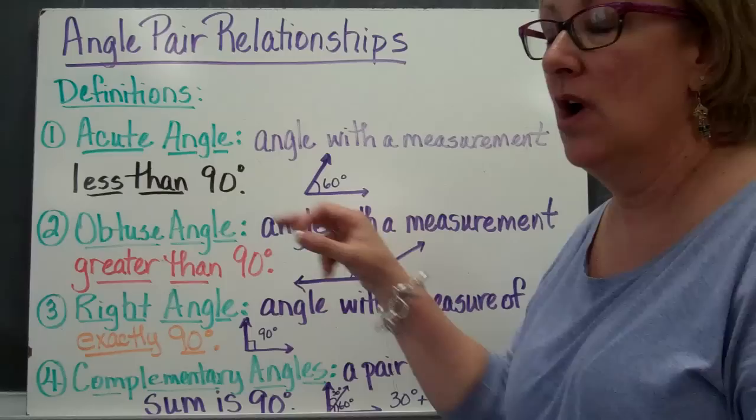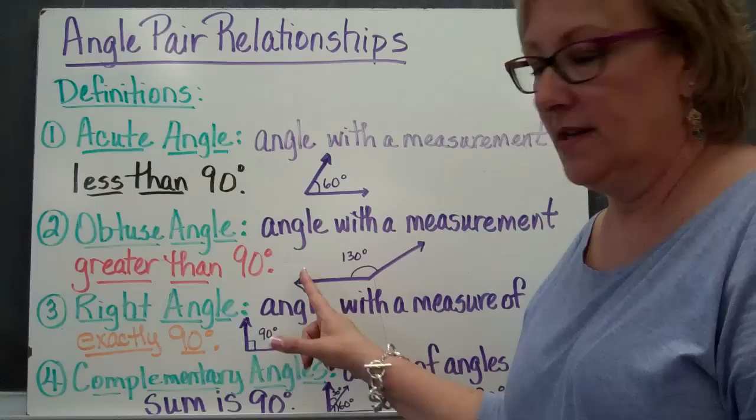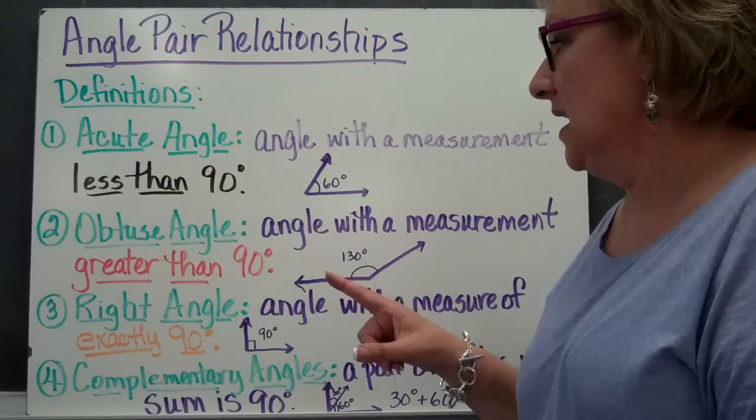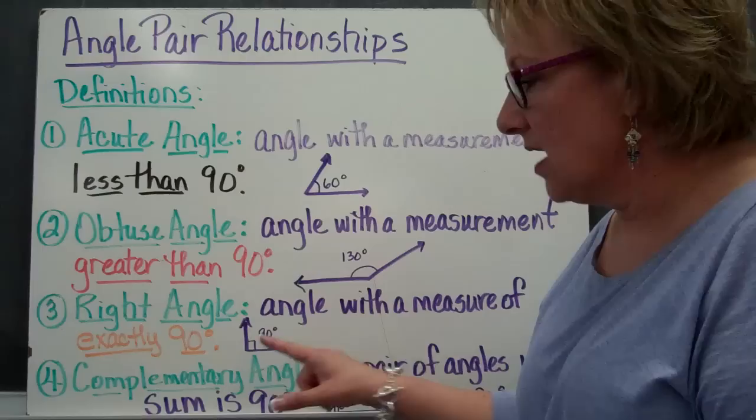I like to refer to it as the smaller angles are acute little angles. The obtuse angle is an angle that measures greater than 90 degrees, so it's going to be your wider angle, or 130 degrees — any measurement over 90 degrees is going to be your obtuse angle. Your right angle is going to have a measurement of exactly 90 degrees, and if you see this little square box in the angle, right at the angle, that means that it is a 90-degree angle.